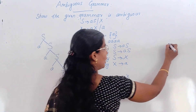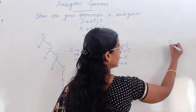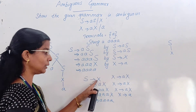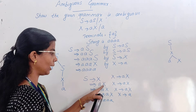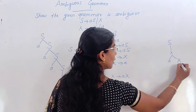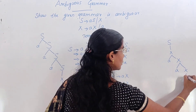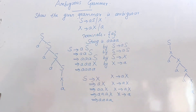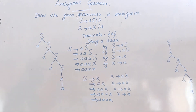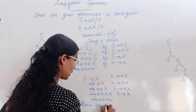How will you draw this parse tree? S produces X. This X is replaced with AX. Then this X with AX. Again this X with AX. And at last, A. Check both parse trees — both parse trees are different. Hence the grammar is ambiguous.